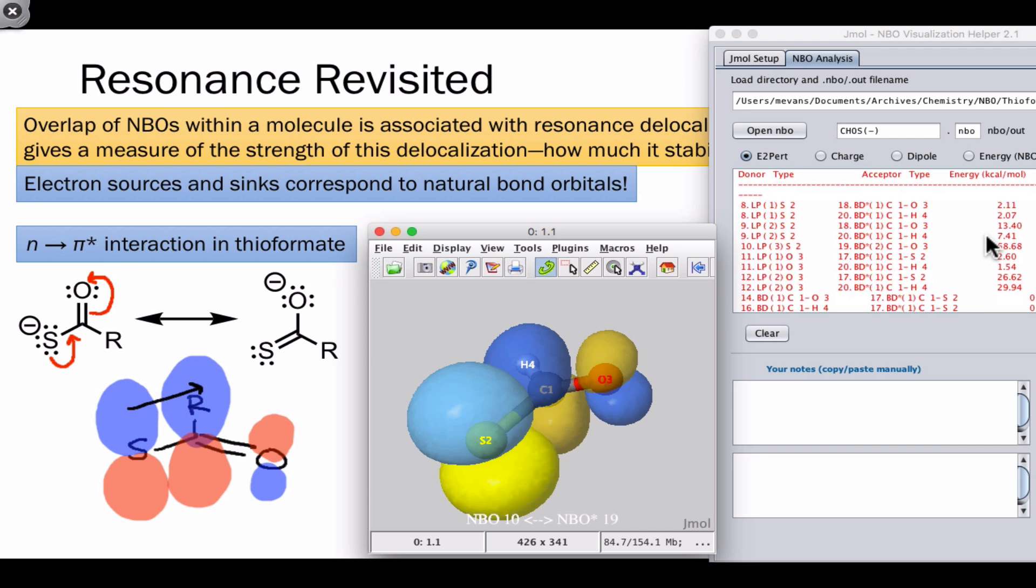If we look at a table that lists the most important interactions in the molecule and the energies associated with them, we can see that the interaction between sulfur's lone pair and the pi star orbital between carbon and oxygen, the Bd star 2 indicates a pi star orbital, is very large in comparison to all of the others, 68.7 kilocalories per mole. That's huge stabilization associated with this orbital overlap, and it's telling us that the alternative resonance form is extremely important to the structure of the molecule as a whole.